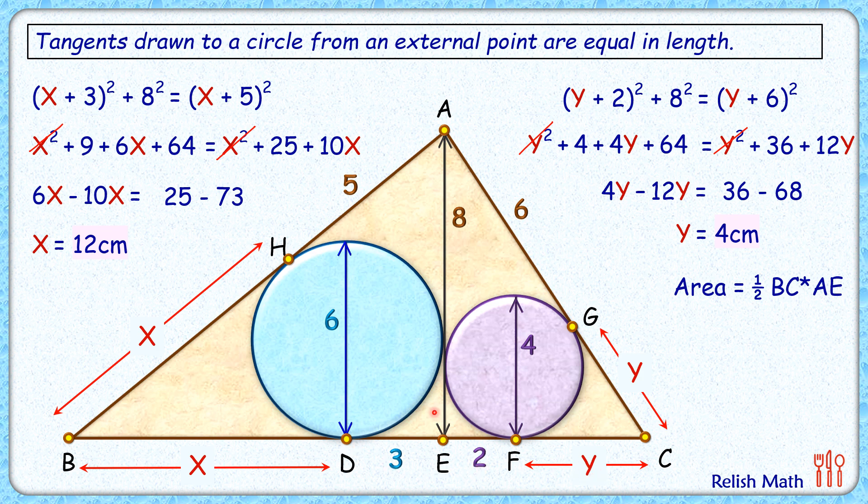So area of this triangle is half of 21 times 8. Solving, we get the area as 84 cm², and that's our answer.